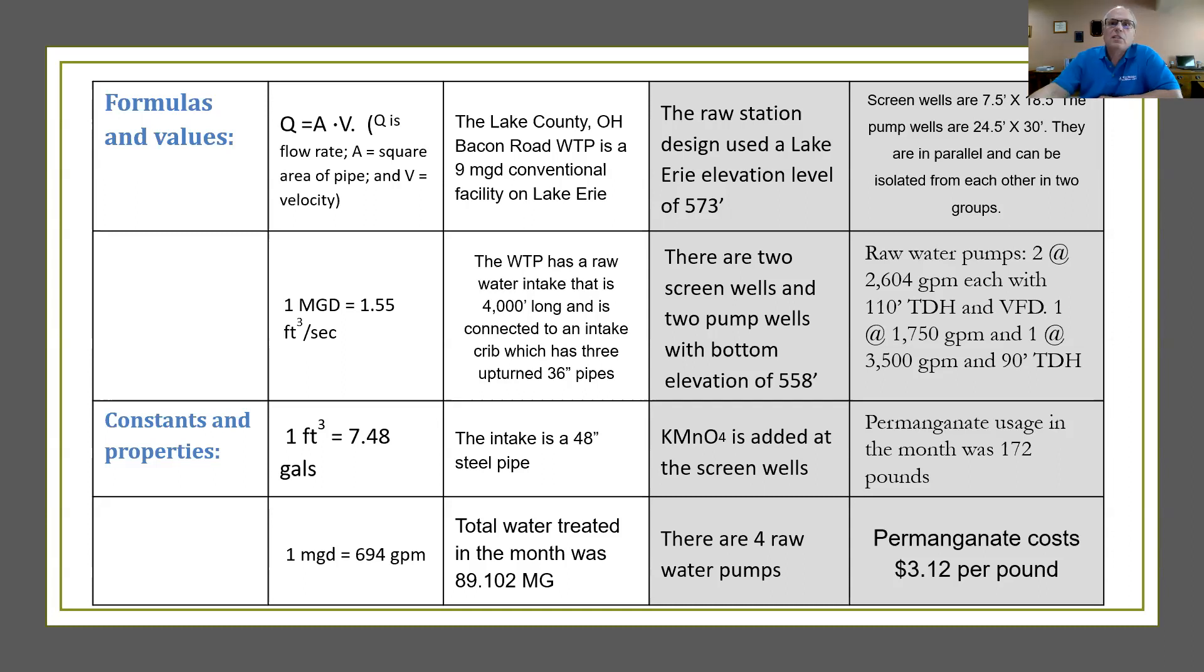Going to the next column we see that the raw station was designed at a Lake Erie elevation level of 573 feet. That's critical to one of the problems coming up. Now the water comes in through the intake and it comes into the raw water station where there are two screen wells and two pump wells. The water goes through the screens into the pump wells and each of those have a bottom elevation of 558 feet.